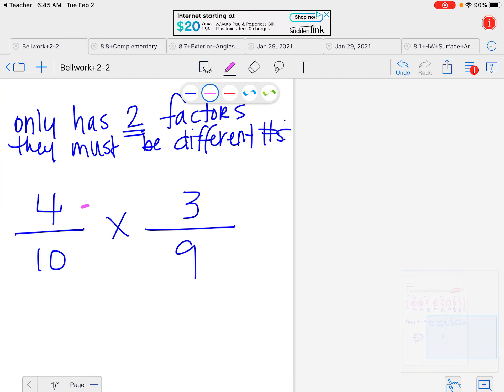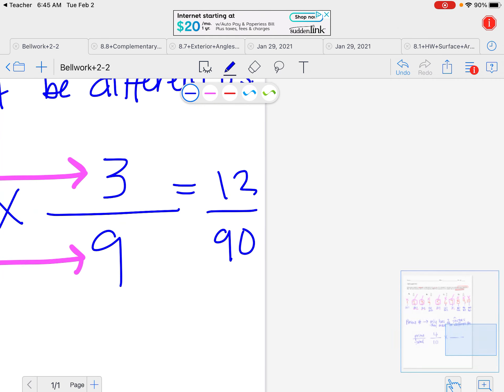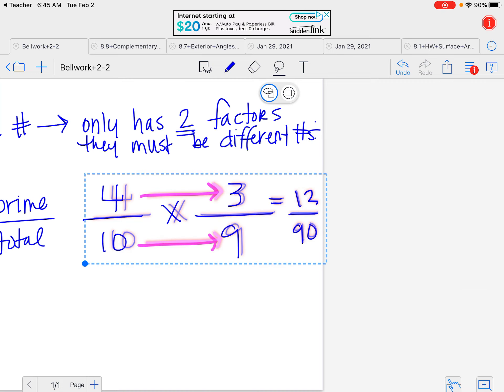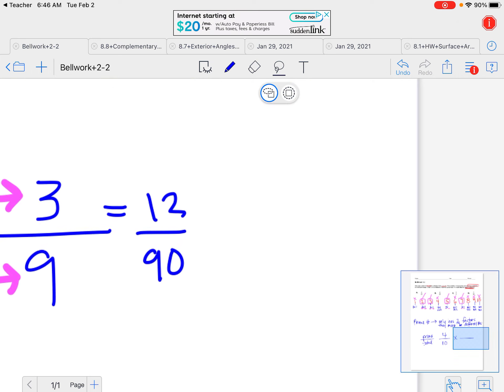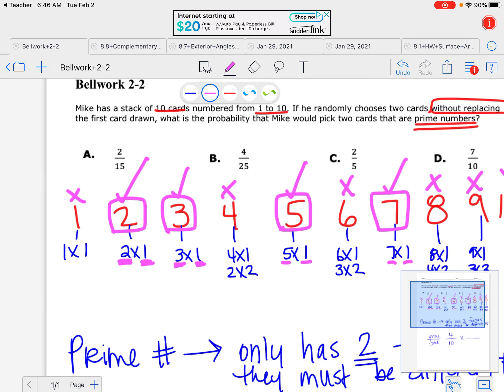Then I would multiply these two fractions together, and 4 times 3 is 12, and 9 times 10 is 90. 12 over 90, that does not look like that is an answer choice. So that means this could be simplified. So let's make that a little bit smaller. I could divide these for sure by 3. 12 divided by 3 is 4, and 90 divided by 3 is 30. Okay, that's still even, so let me divide it by 2 one more time. 4 divided by 2 is 2, and 30 divided by 2 is 15. So my final answer should be 2 over 15, which is answer choice A.